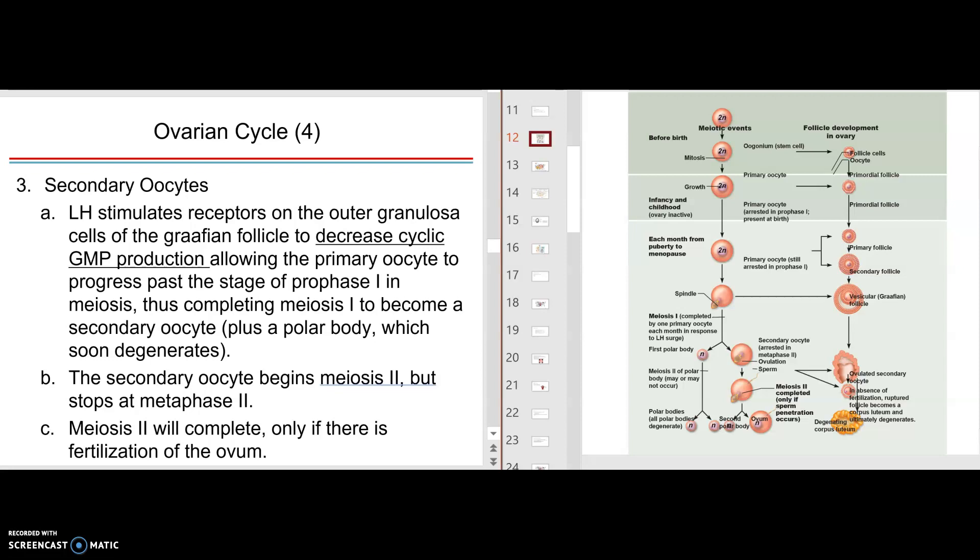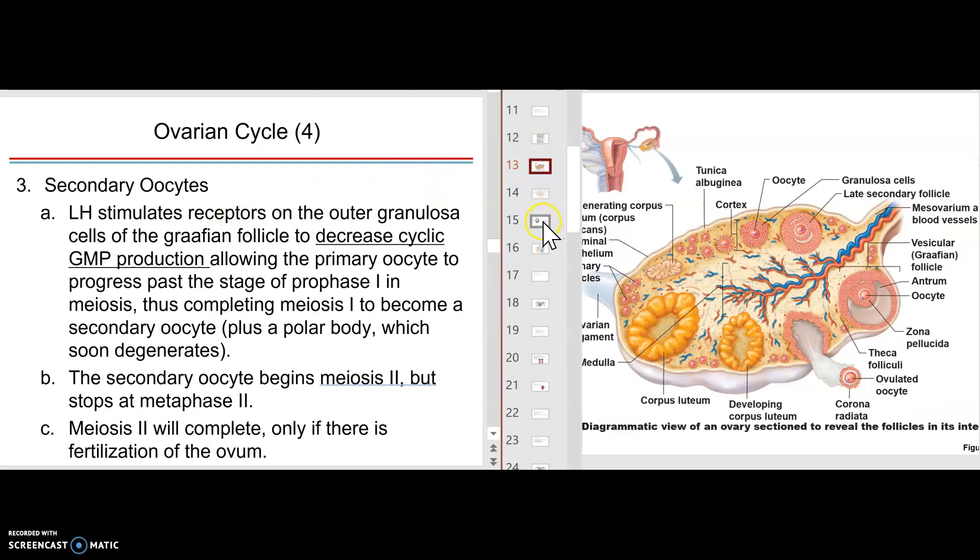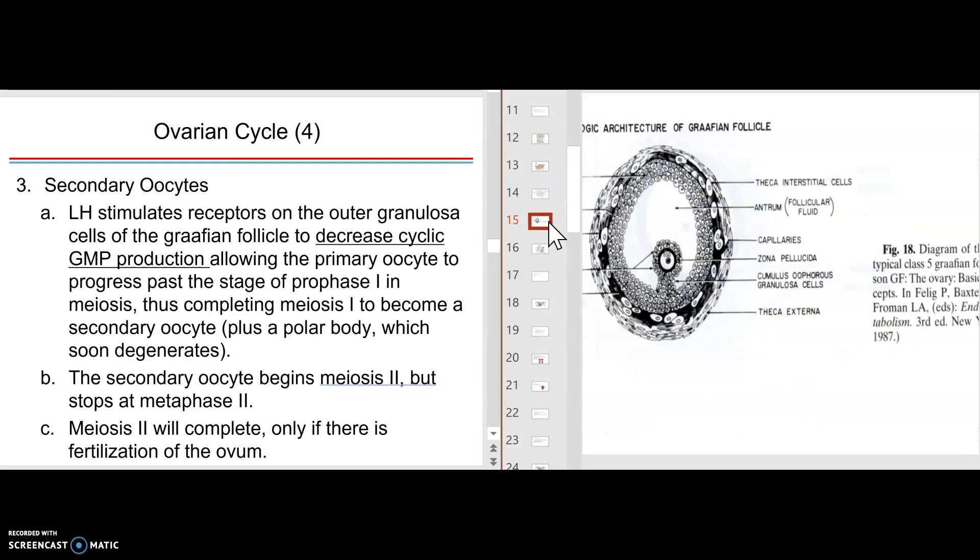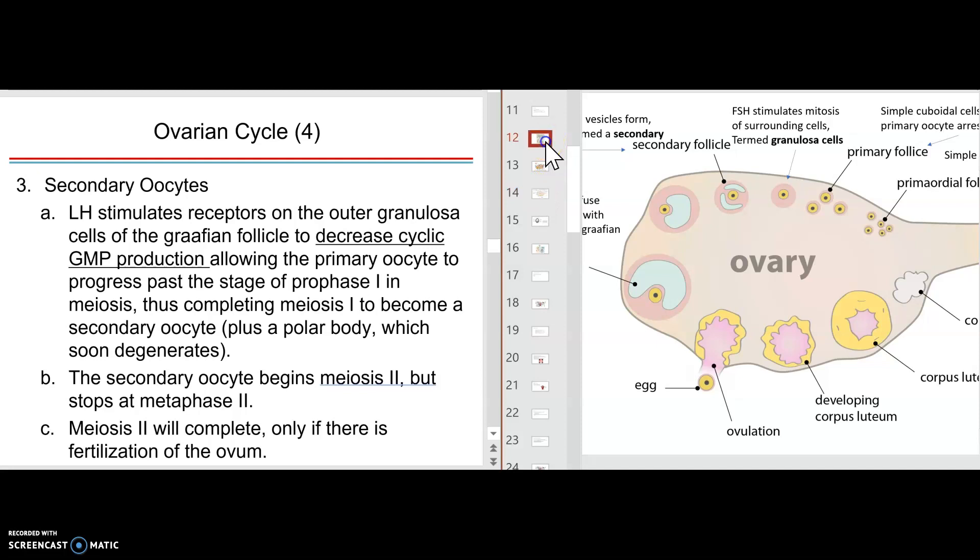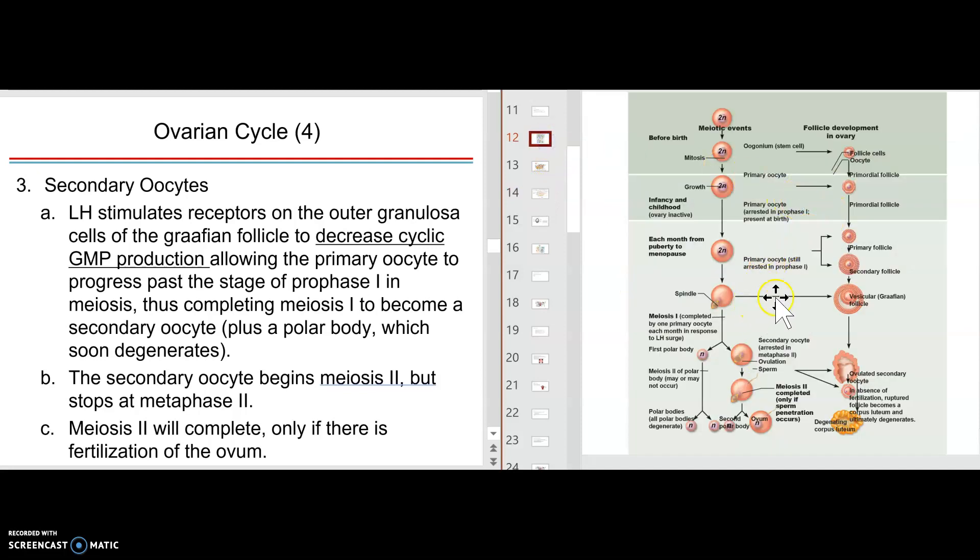Okay class, we're back again. Where we ended was that luteinizing hormone stimulates the receptors on the outer granulosa cells of the graafian follicle. Let's look at that graafian follicle again. On the outer granulosa cells to stop the production of cyclic GMP, which then allows the oocyte to go from prophase one all the way through meiosis again, further into meiosis, to then go to metaphase two.